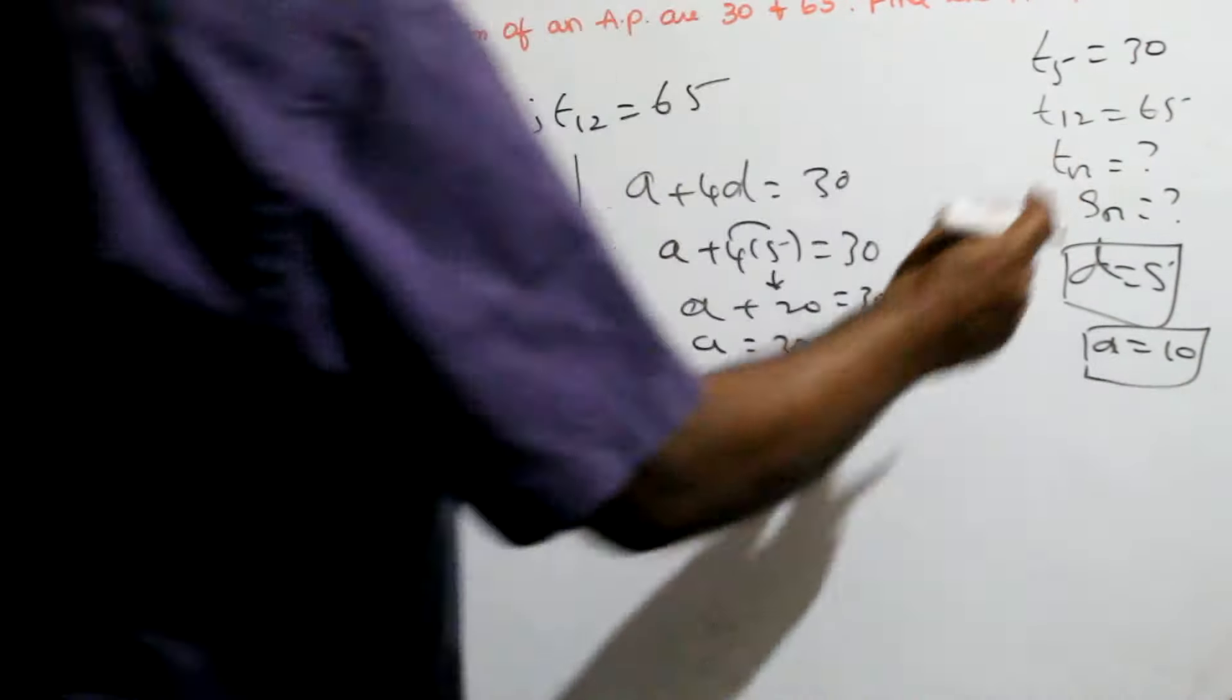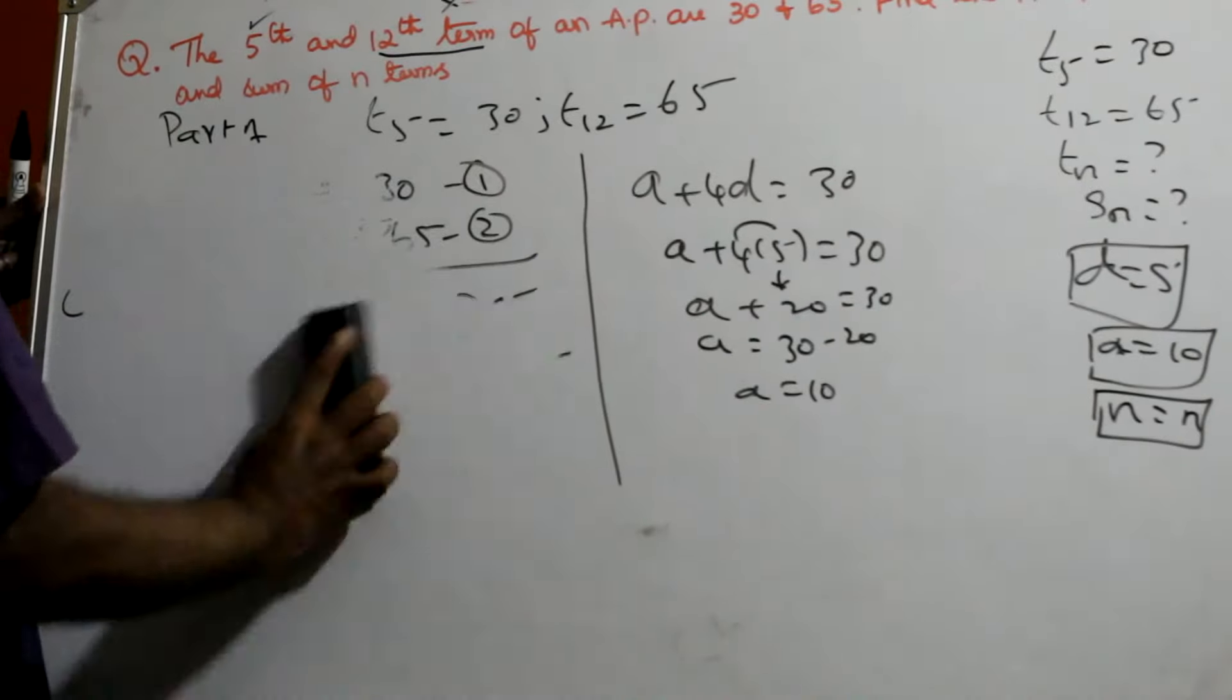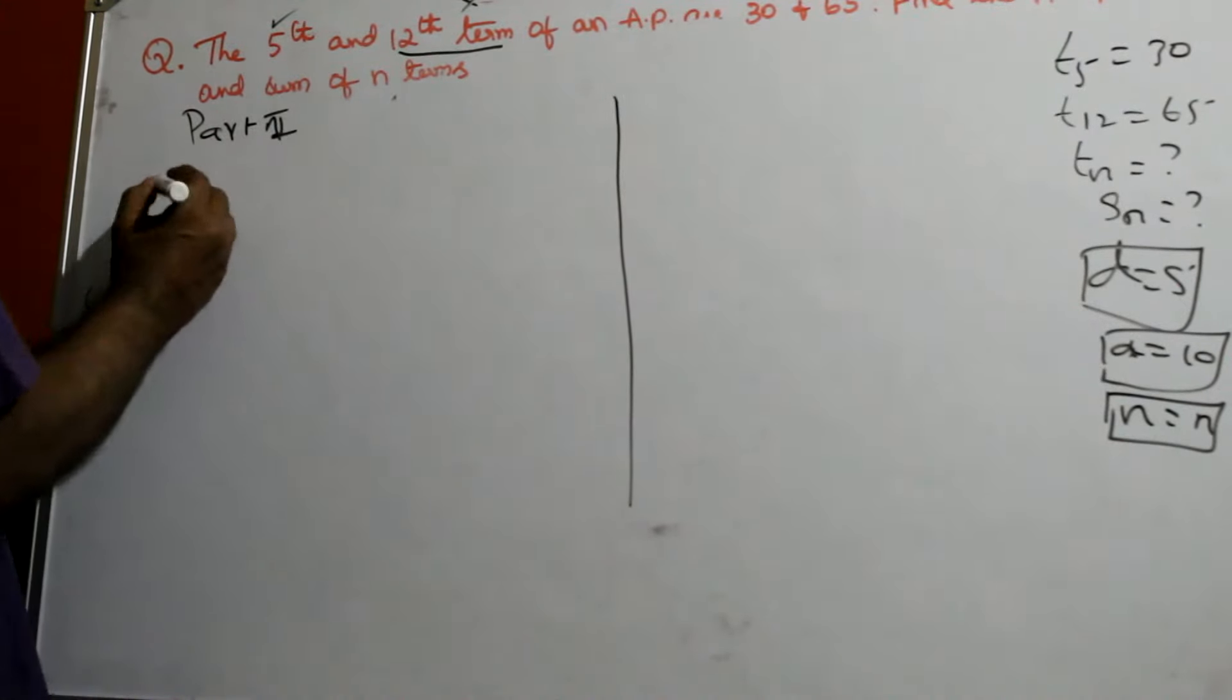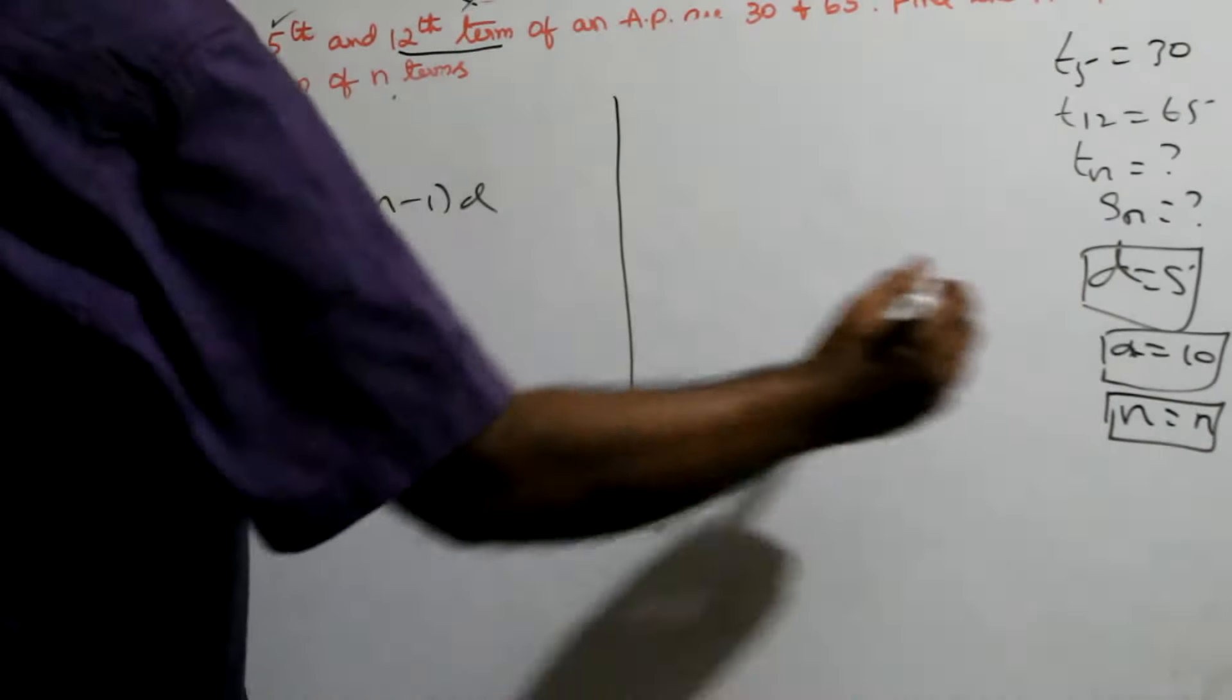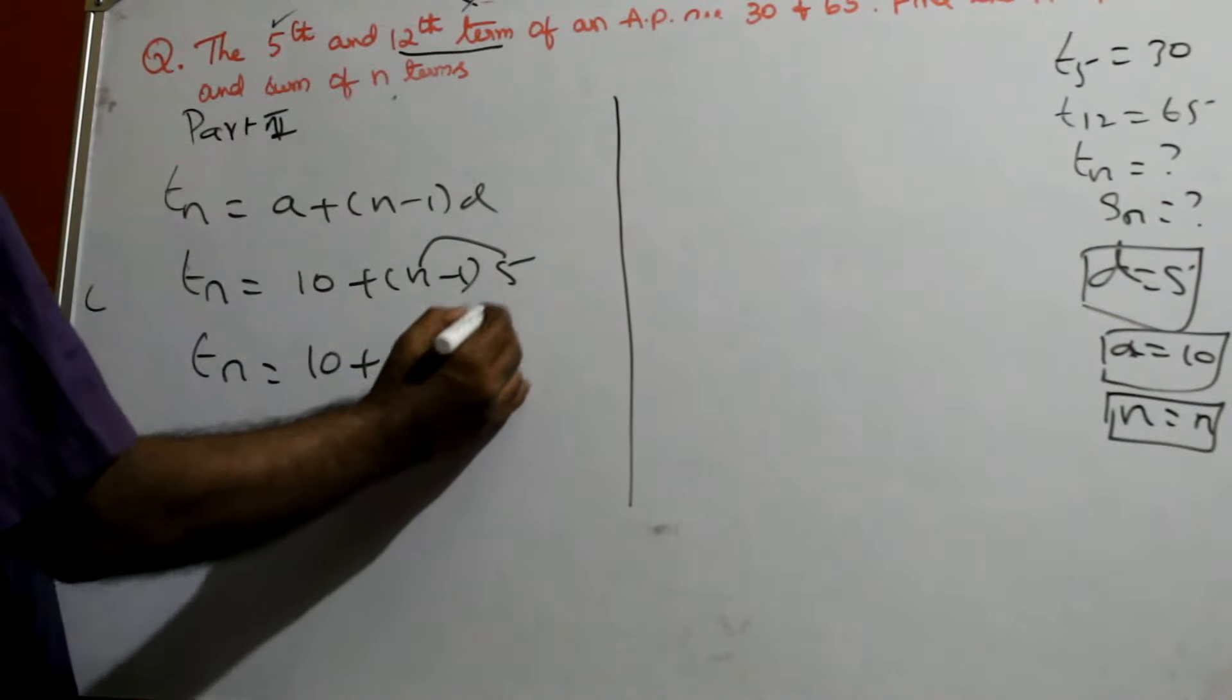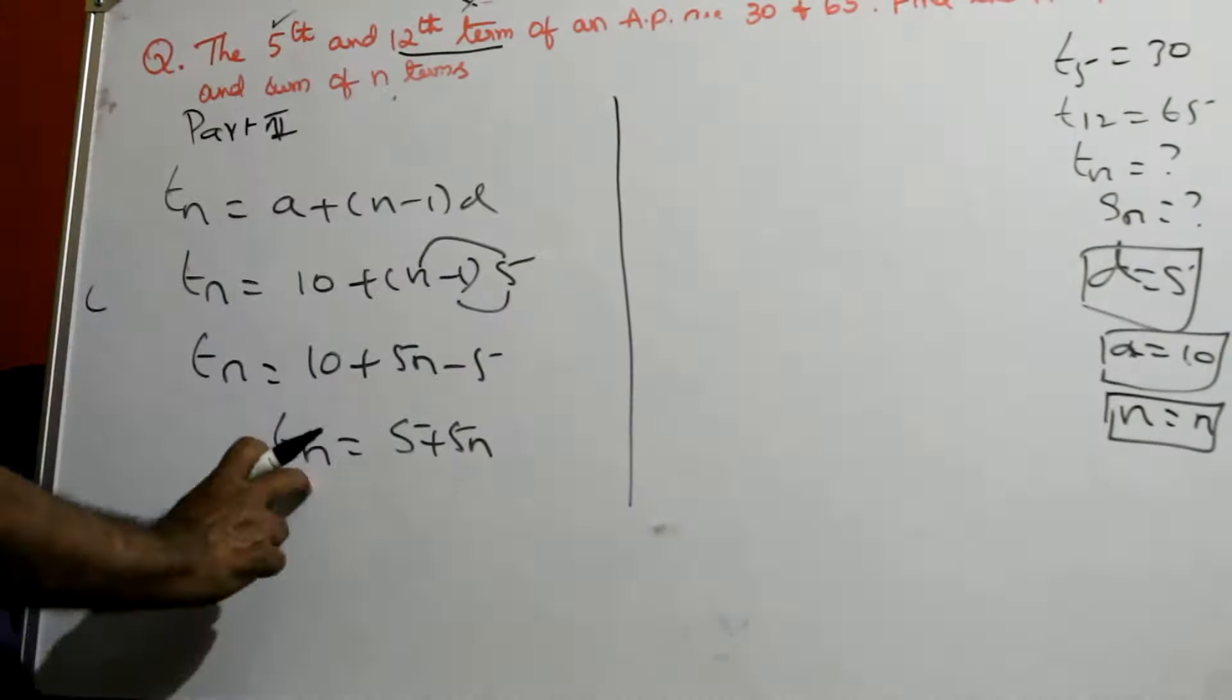And we have to find only nth term. Nth term means general term. So let's put n is equal to n only. Now you can find Tn and Sn. That's part 2. That you can call it as part 2. So part 1 is nothing but finding A and D. And part 2 is finding Tn and Sn. Tn is equal to, you know the formula, A plus n minus 1 into D. Tn is n only. A is nothing but 10, plus n is n only, minus 1 into D is nothing but 5.